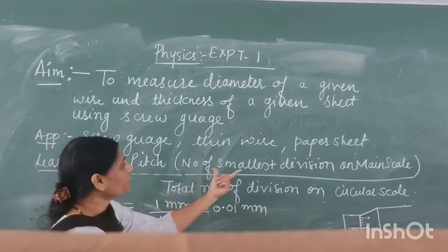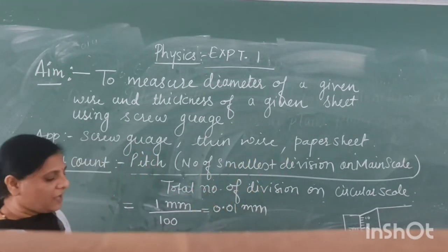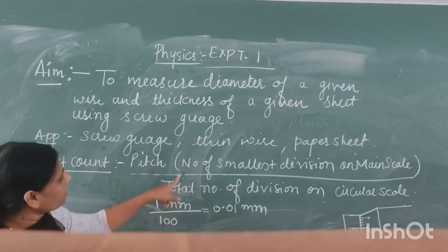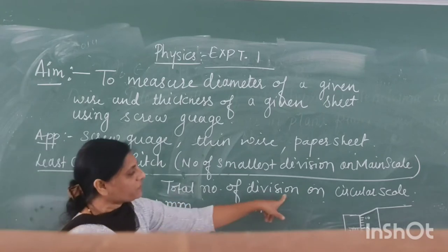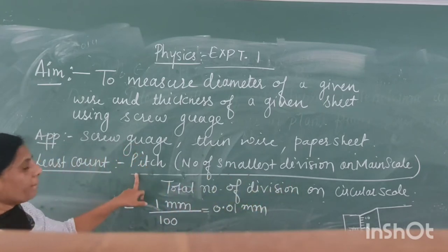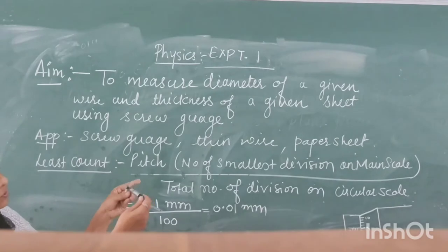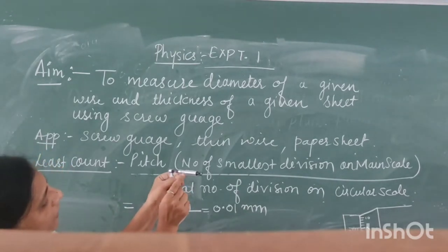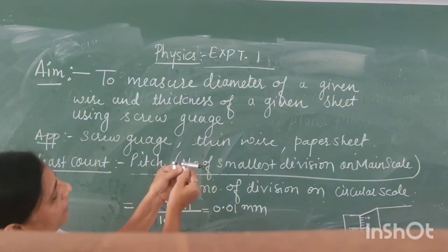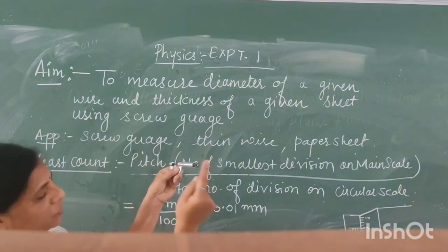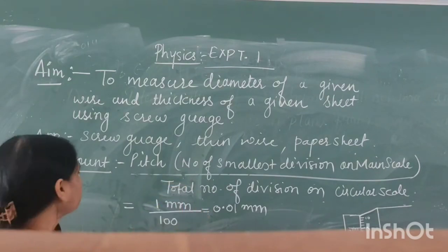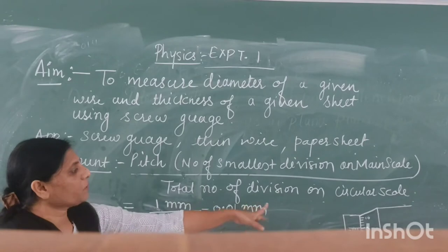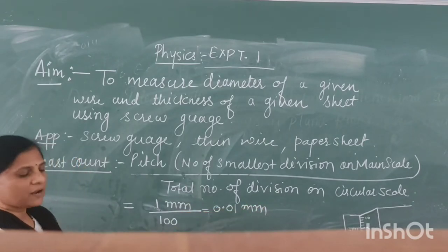The main scale and circular scale are the two parts. Pitch = number of smallest divisions on main scale divided by total number of divisions on circular scale. The pitch of the screw gauge is 1 millimeter, because between 0 and 5 there are four lines, so the difference between the first two lines is 1 millimeter. The total divisions on circular scale are 100.